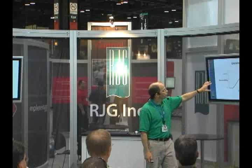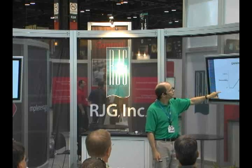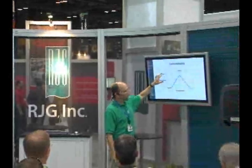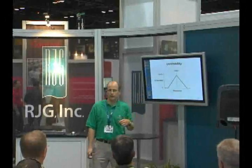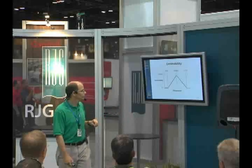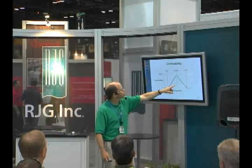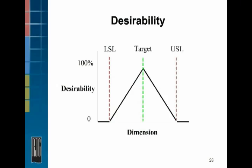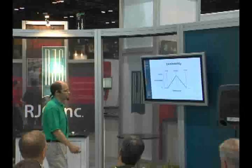We use something called a desirability function that says: at our target dimension, we're going to consider that part to have 100% desirability — that's a perfect part. And if we get to the upper or lower specification limit, we've got zero desirability. In between, 50% or whatever — this is a compromise. It's not a bad part, it's not perfect.